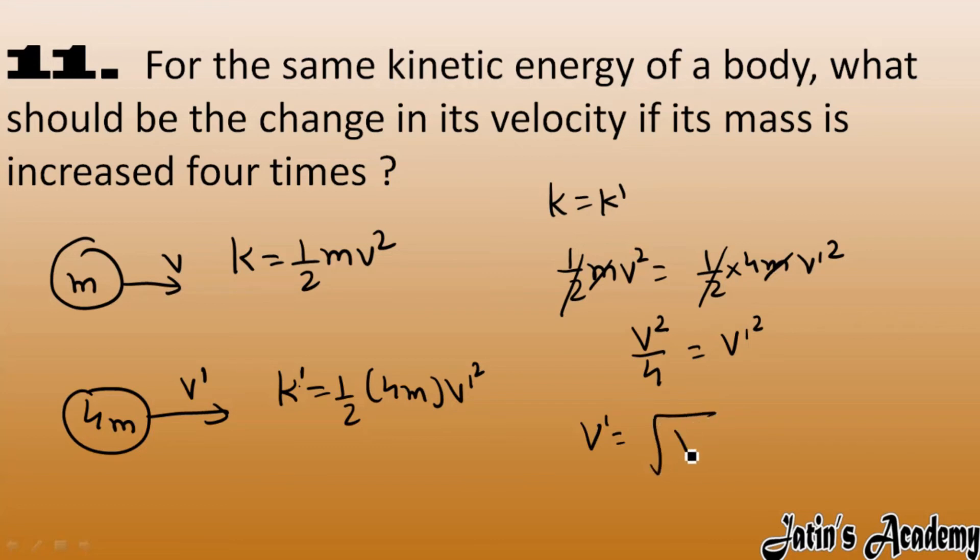Just separate this root. v square we write it as v and four we write it as two, so v dash we got it as v by two, means velocity is decreased to half. So here they are asking about what should be the change in velocity - velocity gets half, clear?